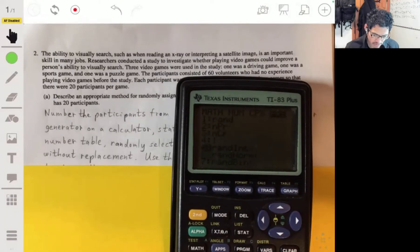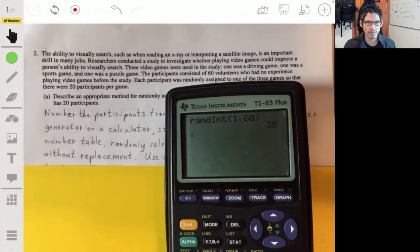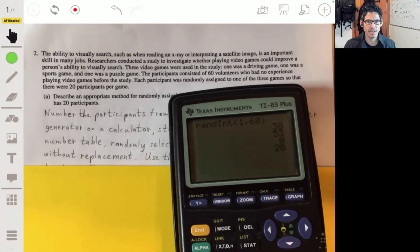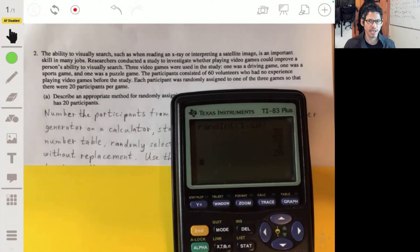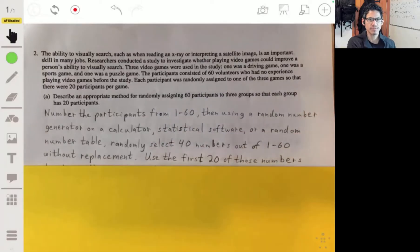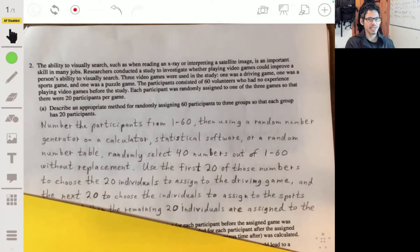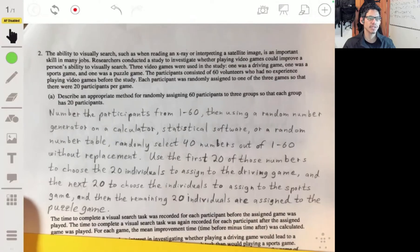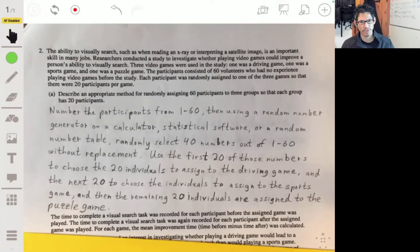And each time you press enter, you'll get a number. Now, when it says without repeats, if I was to get like a 38 again, I wouldn't count it. I would just keep on going until I get 40 different numbers. Then the first 20 I get, I'm going to have those go to the driving game. The next 20 would go to the sports game. And then the 20 that weren't picked at all, those would be the ones going to the puzzle game.